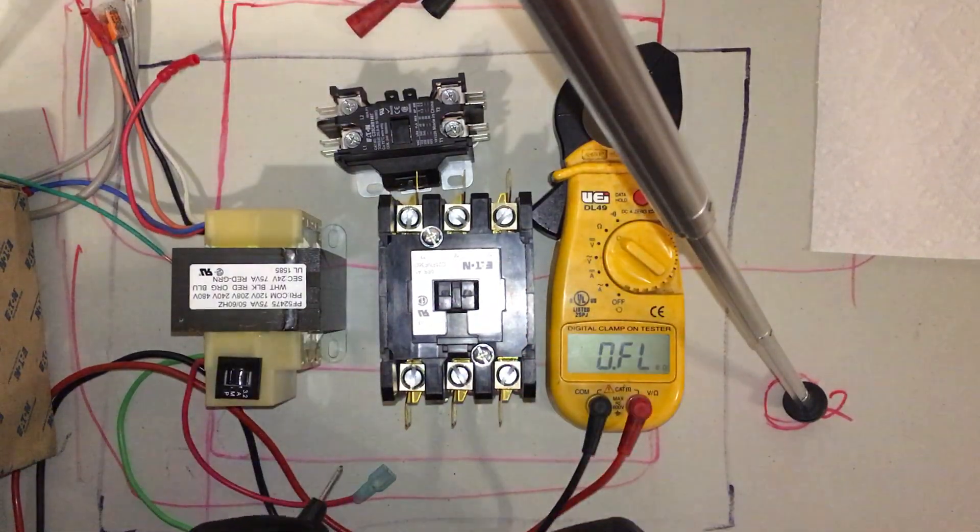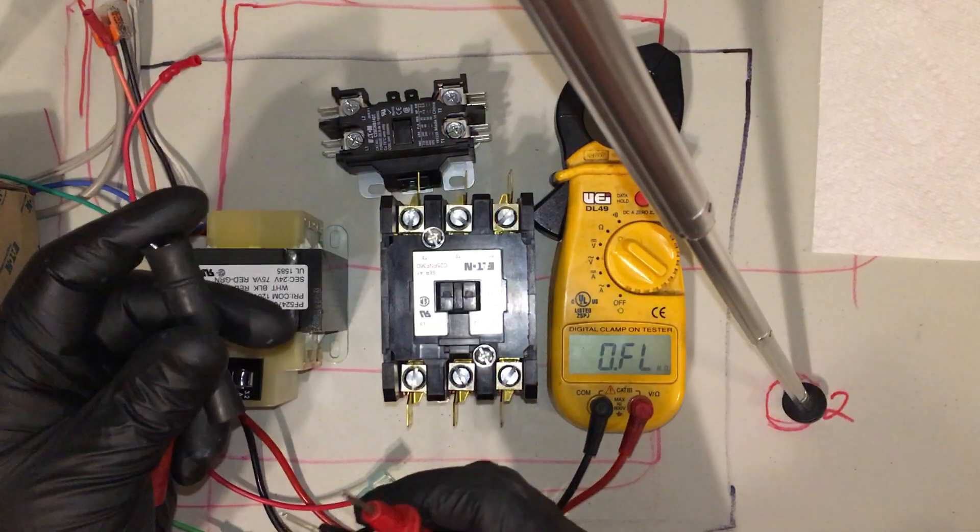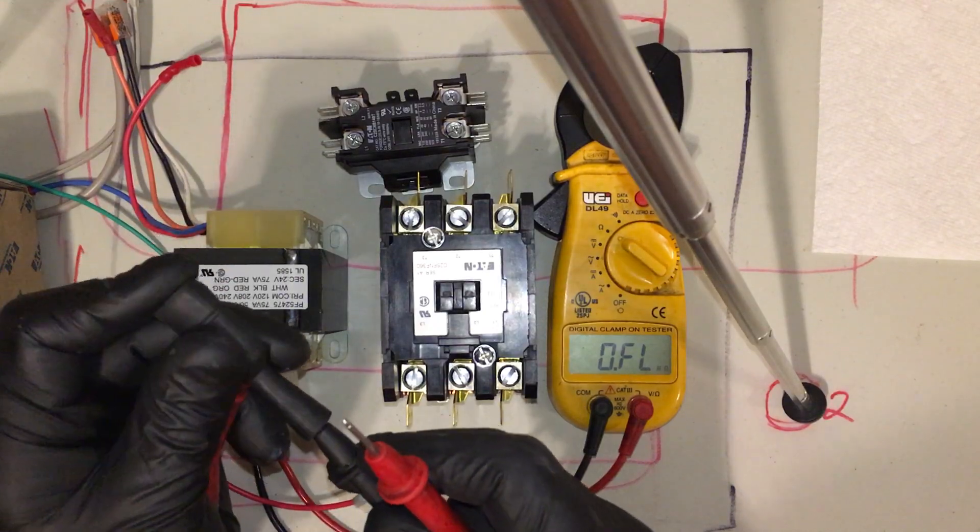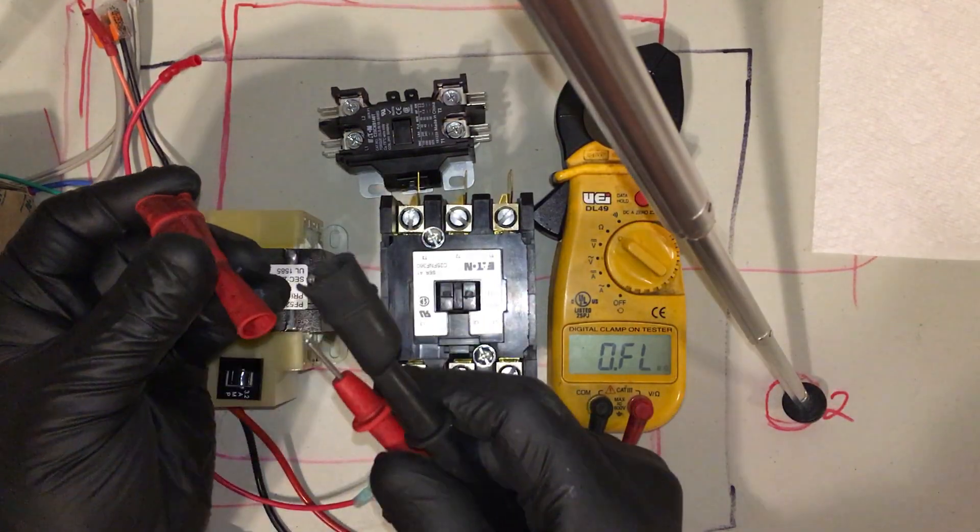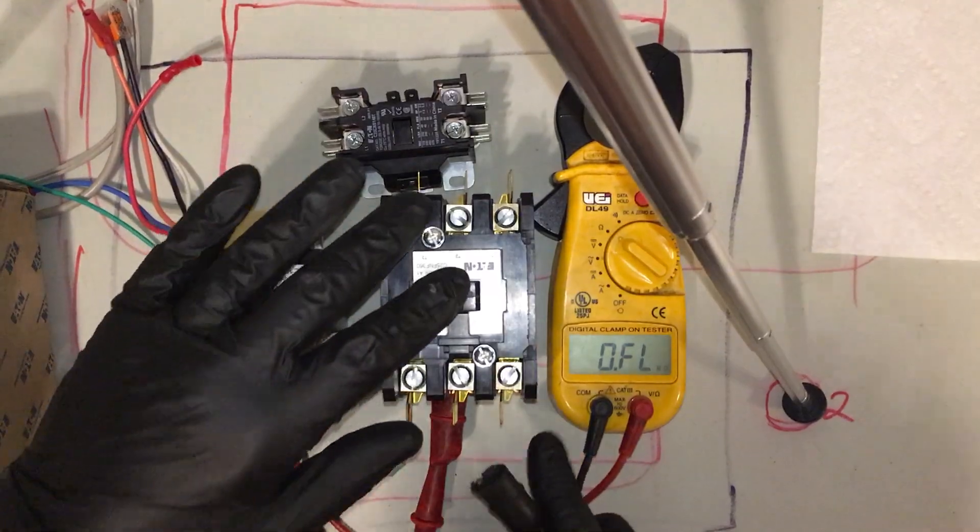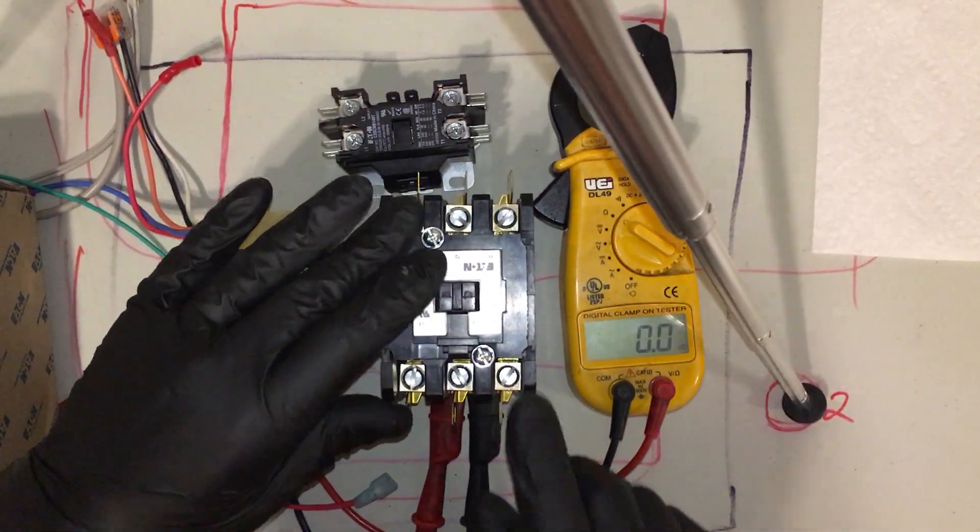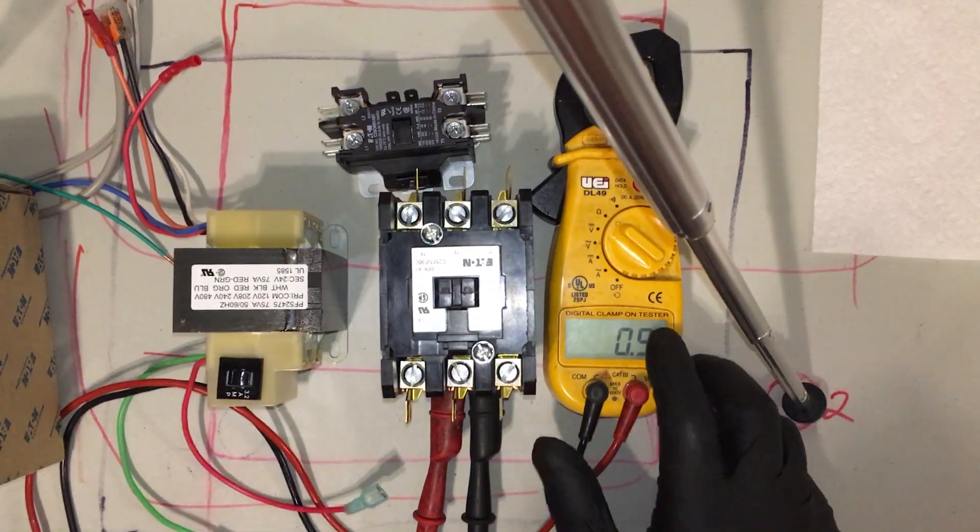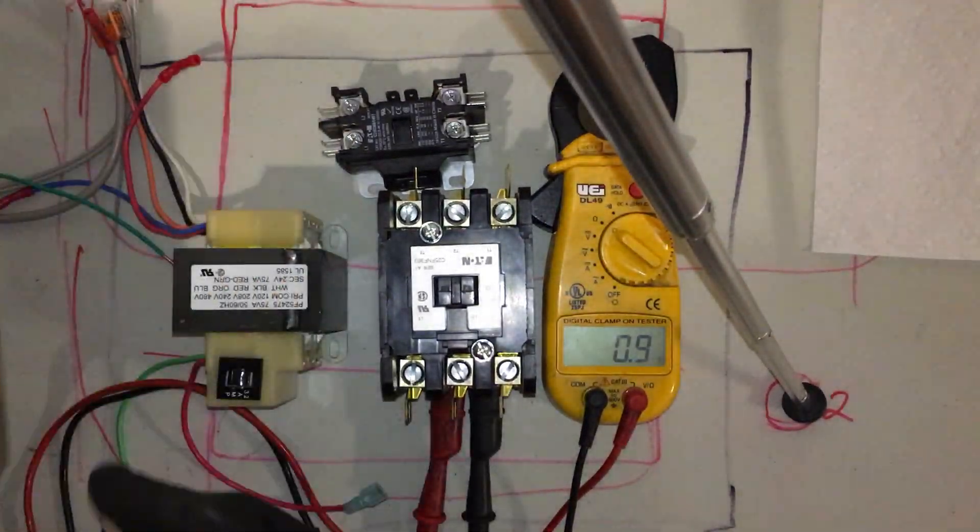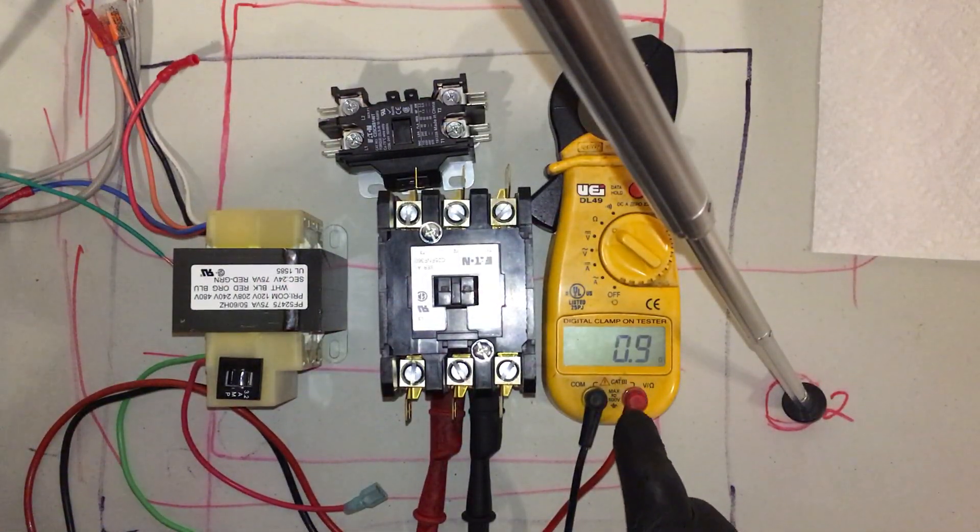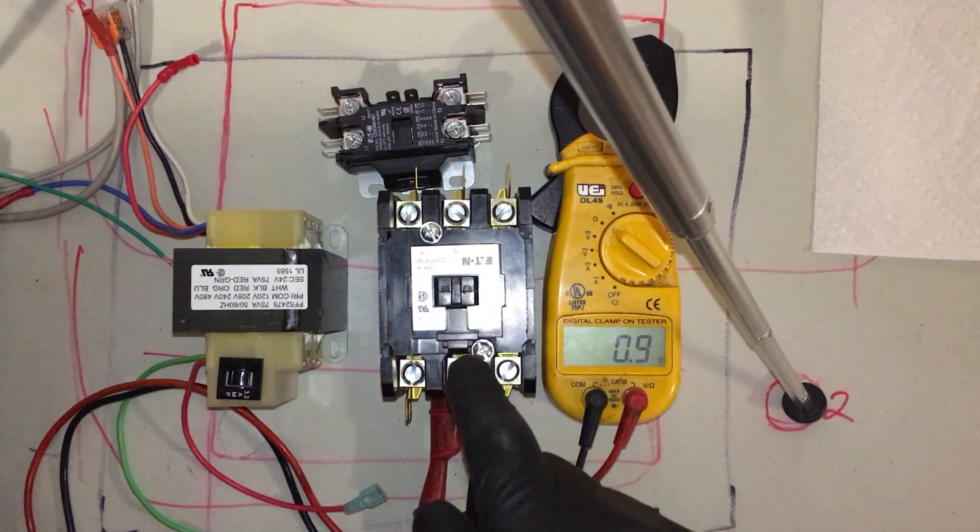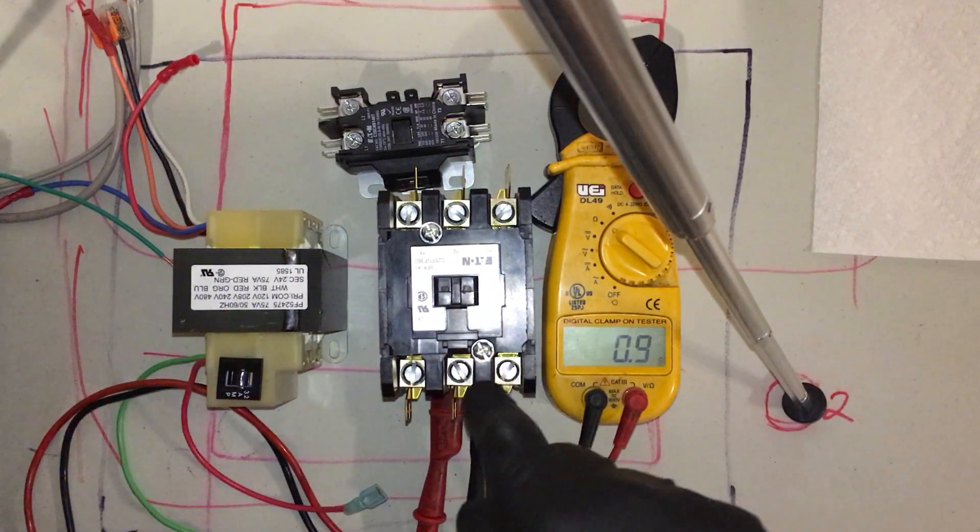Using alligator clips is always a good way to go when you're wanting to ohm something, so you take your fingers and your body out of the equation. So we just put this on the coil. This is a brand new contactor out of the box and it reads 0.9 ohms, so less than an ohm. That's a brand new good functioning contactor.